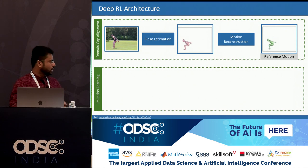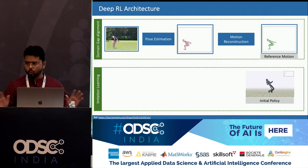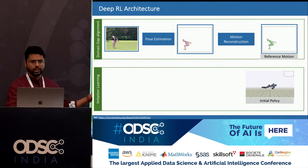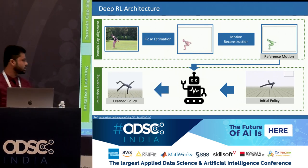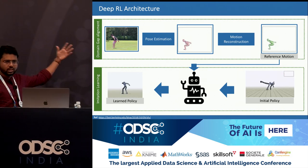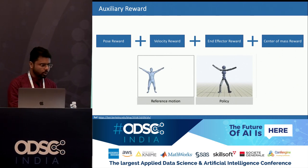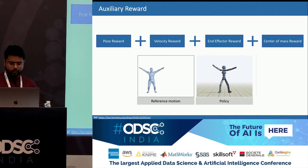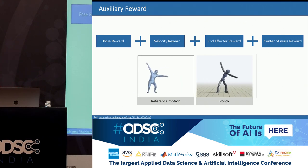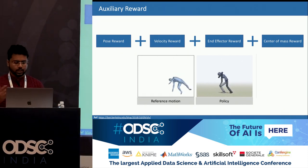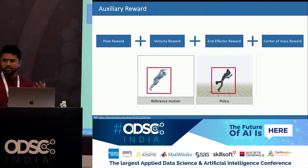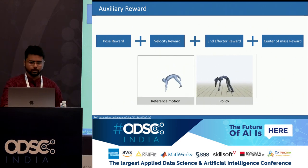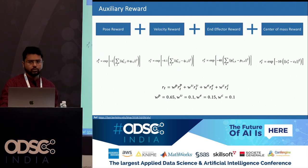Next, we do imitation learning. Initially the policy doesn't know how to do a particular task, so it just takes random actions — just falling down on the ground. The agent takes the reference motion as input, goes through imitation learning, and then the policy learns how to do the particular task demonstrated in the given video. The most important thing to figure out is how the reward looks. The state of the agent is represented by pose, velocity, end effector, and center of mass. The agent gets a reward only if it follows the given trajectory in the reference motion. The final reward is a weighted combination of four individual sub-rewards.